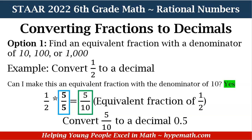Let's look at another example. We are going to convert 1 half to a decimal. Again, our first question will be: can I make this an equivalent fraction with a denominator of 10? The answer is yes. For option 1, we can use 10, 100, or 1000. You always want to choose the smallest number of 10 that you can, because otherwise you'll have to reduce the fraction, which will cause extra steps.